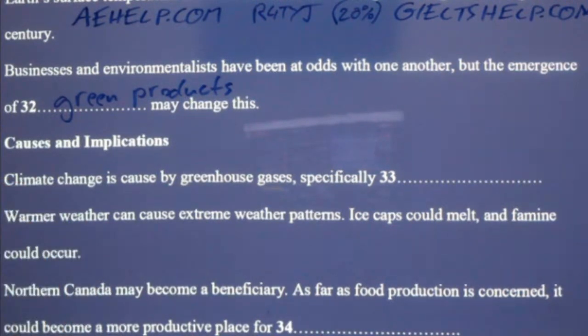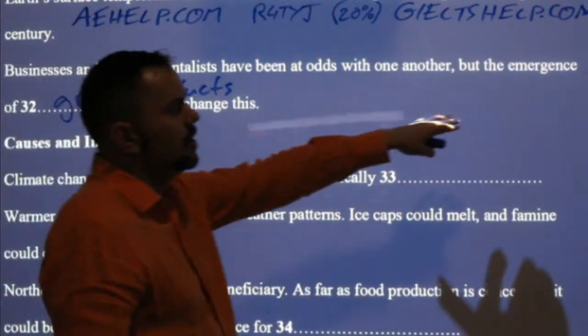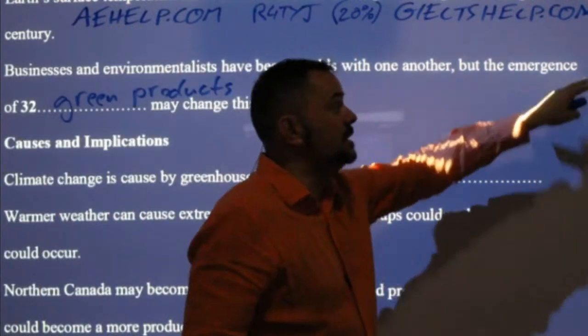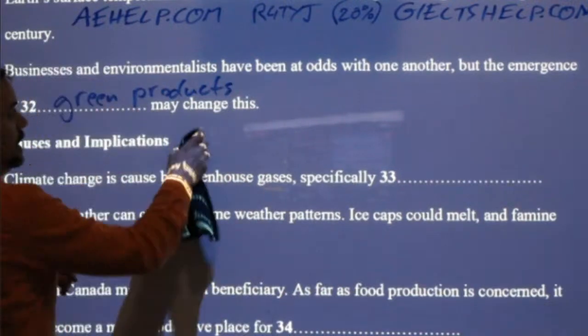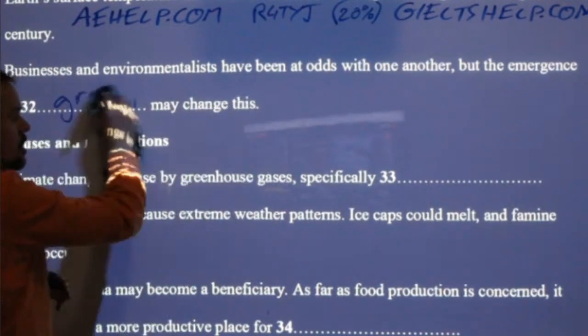Green products — honey, S on the end: emergence of green products. If you don't see an article like 'a' or 'an' here, it's often a good hint that this is going to be a plural. Not always, but often.